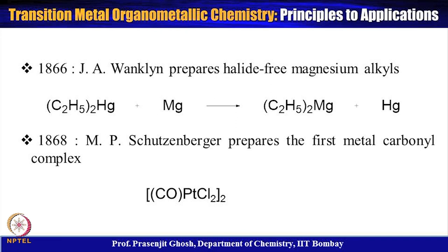In 1868, M.P. Schützenberger prepared the first metal carbonyl complex in the form of [CO·PtCl₂]₂ dimer, where a gaseous carbon monoxide molecule binds to platinum. Organometallic compounds offer a great opportunity to study the variety of interactions occurring between metal and ligands. The ligands are of varying types, and metals have different electronic configurations and different orbitals — s, p, d, and f — which interact with the ligand.